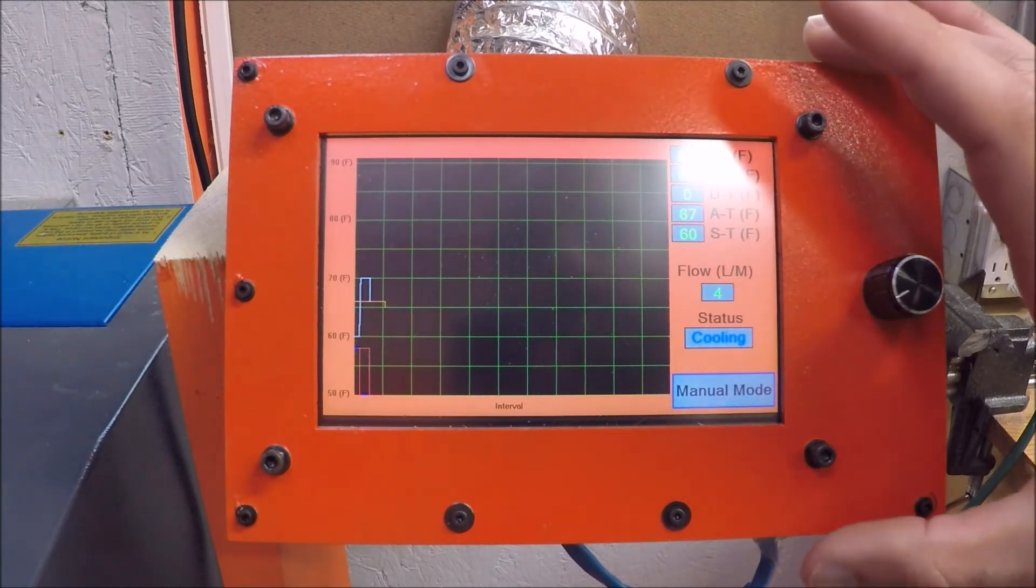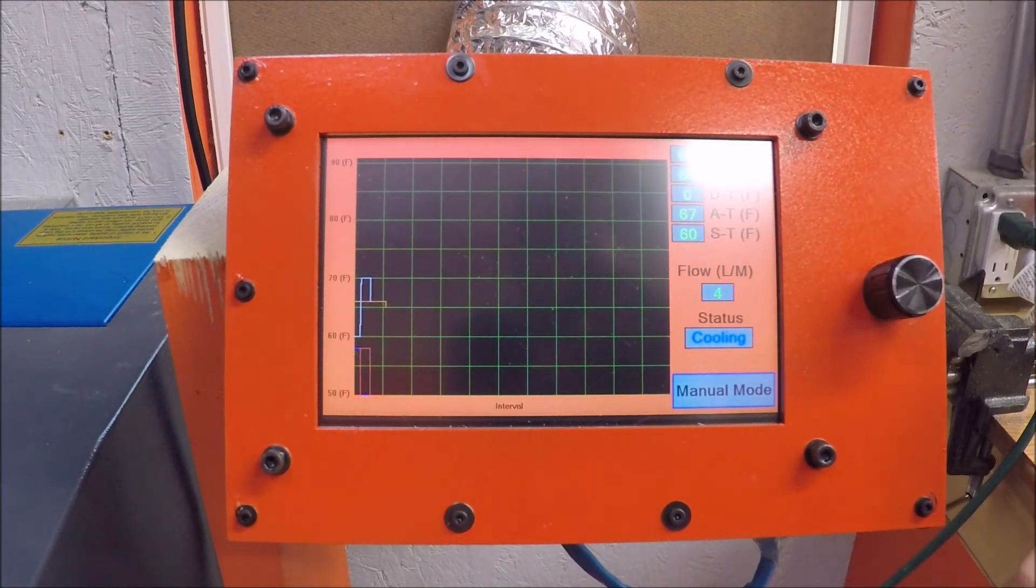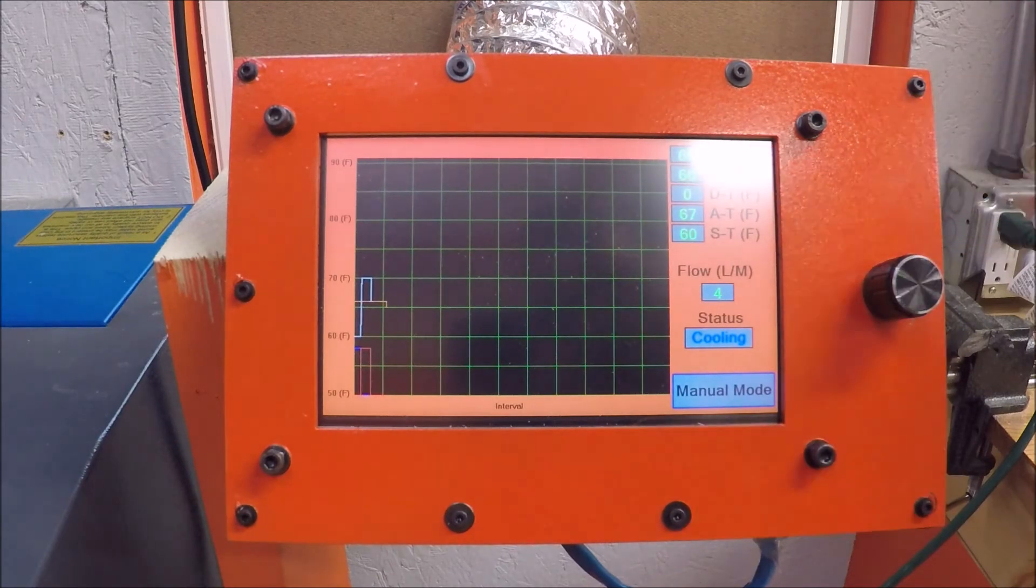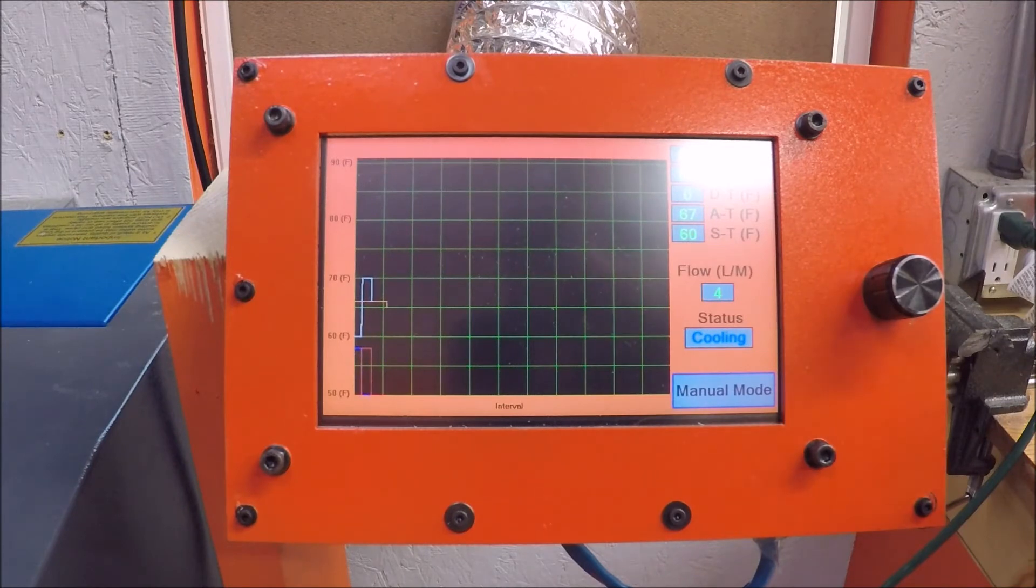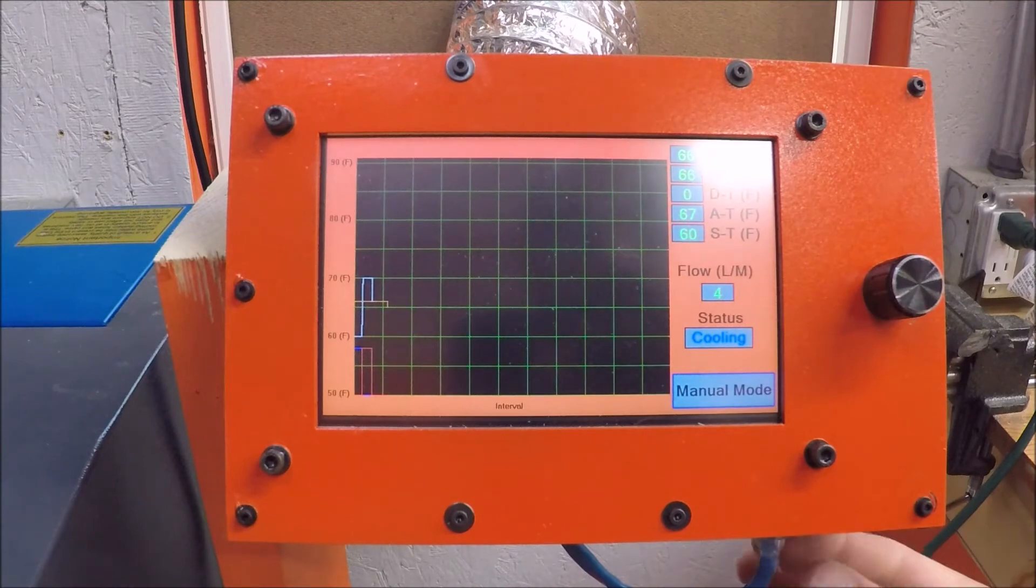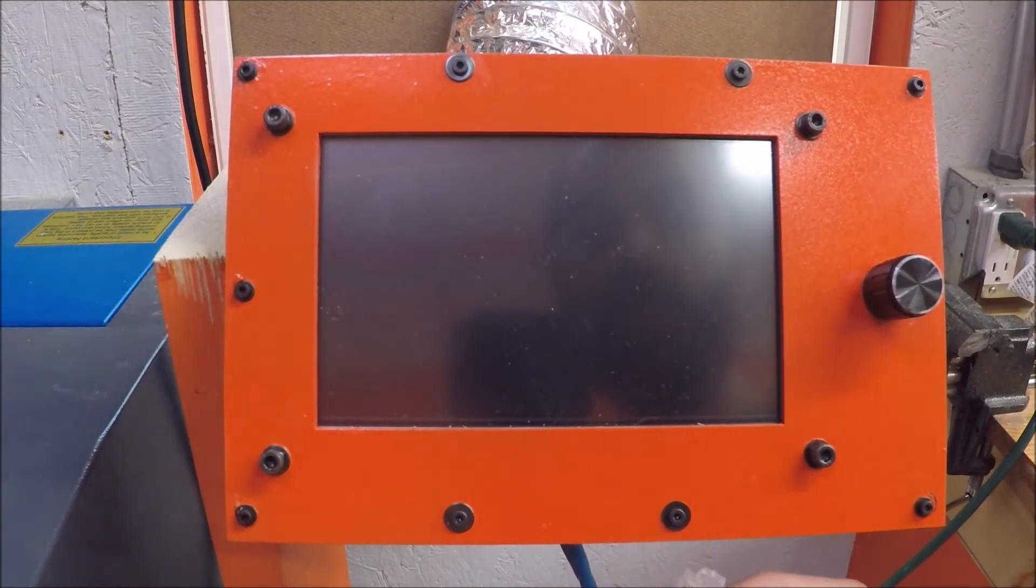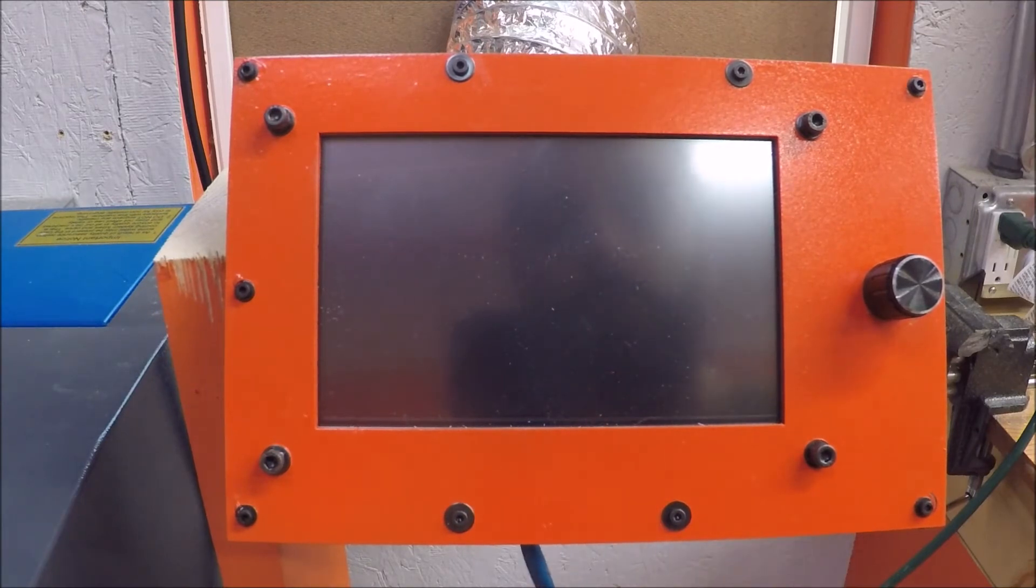This is, again, the brains behind it. It's the Nextion display, a potentiometer, and an Arduino Nano running this whole thing. All of this information from the sensors to the relays, all of that stuff is sent to it through a CAT6 connection. Nothing fancy. I just have 5 volts. Actually, I've got 12 volts coming in through the CAT6.